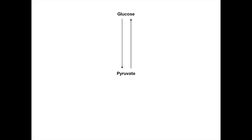As a brief refresher, in the last lesson we discussed glycolysis and gluconeogenesis. When you start with glucose and ultimately form pyruvate downstream, that is glycolysis, shown here in red. If instead you move in the reverse direction, starting with pyruvate and going up to glucose, that is gluconeogenesis, shown here in blue.